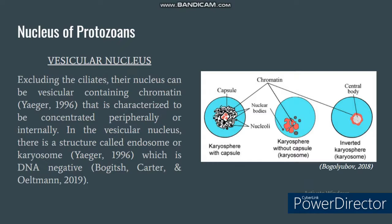Let's move into their nucleus. There are two types of nucleus. The first one is vesicular nucleus and the other one is compact nucleus. For the vesicular nucleus, excluding the ciliates, it contains chromatin that is characterized to be concentrated peripherally or internally. In the vesicular nucleus, there is also a structure called endosome or karyosome which is DNA negative.